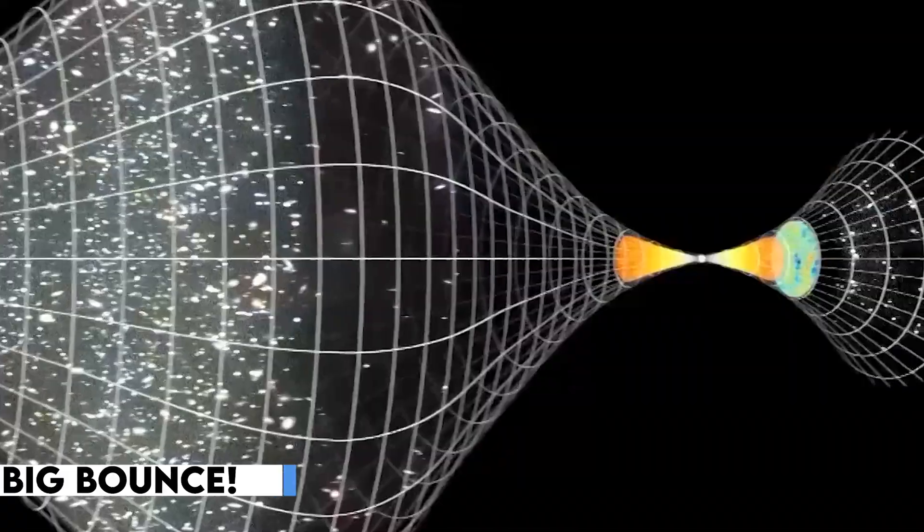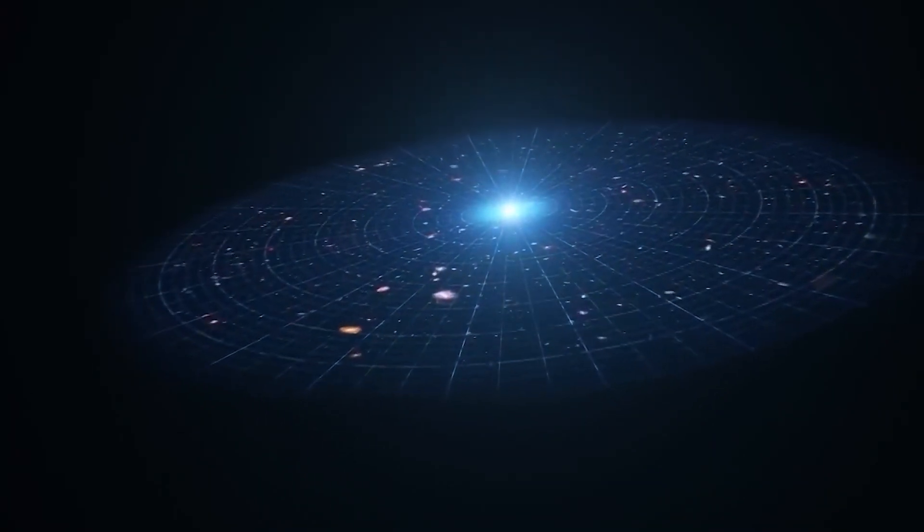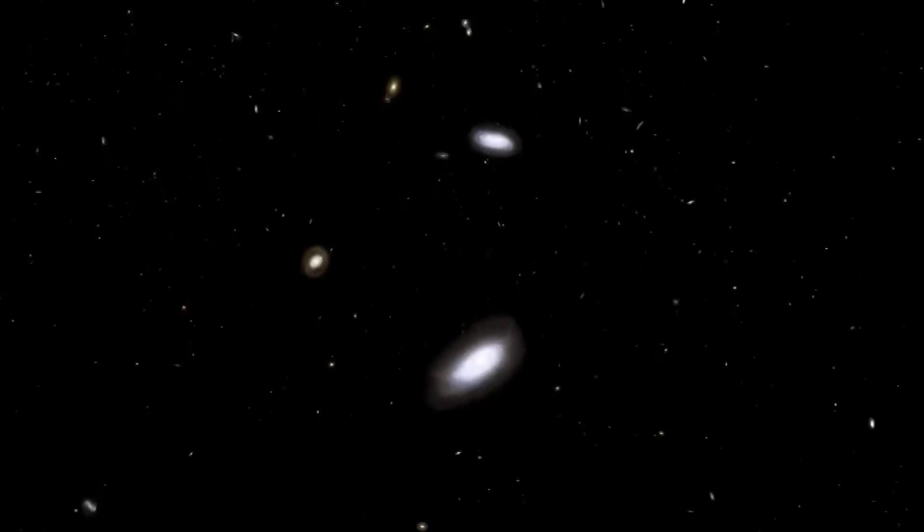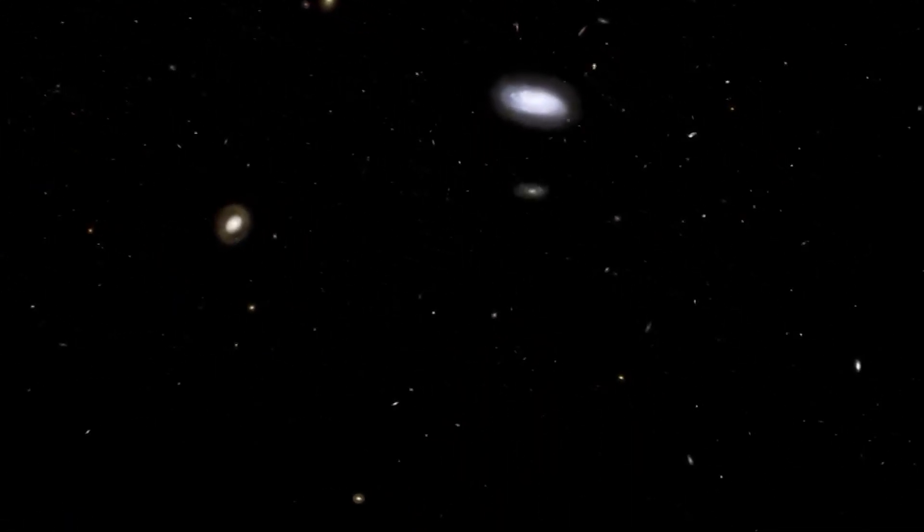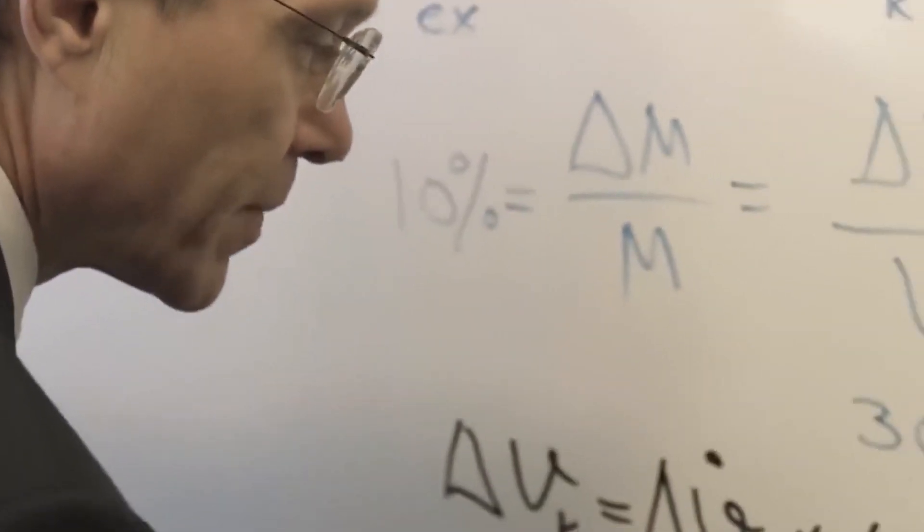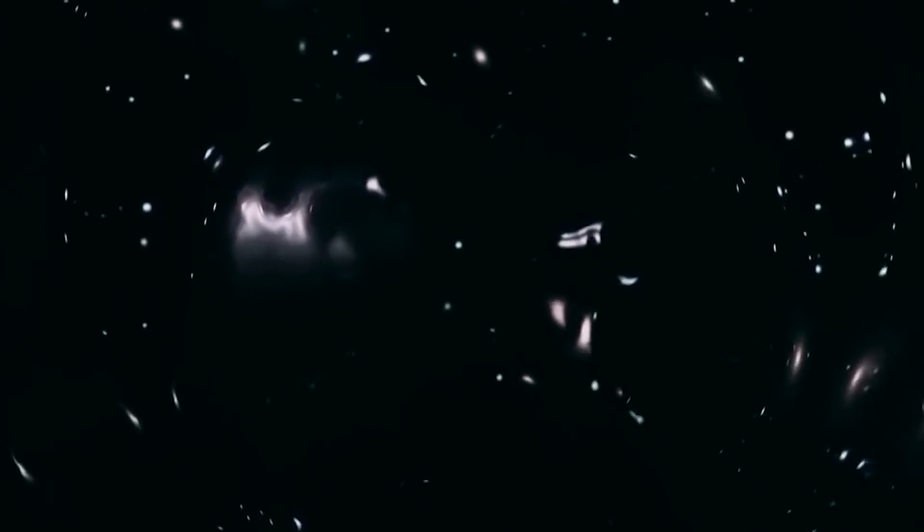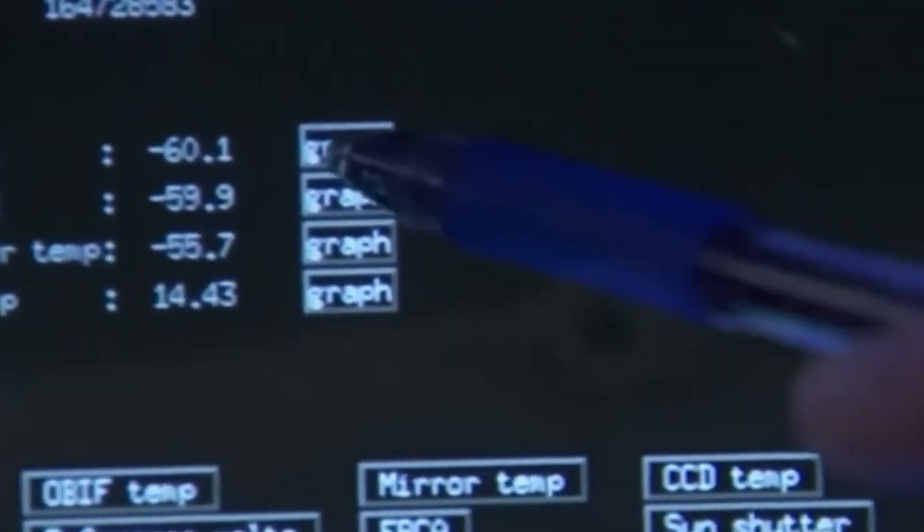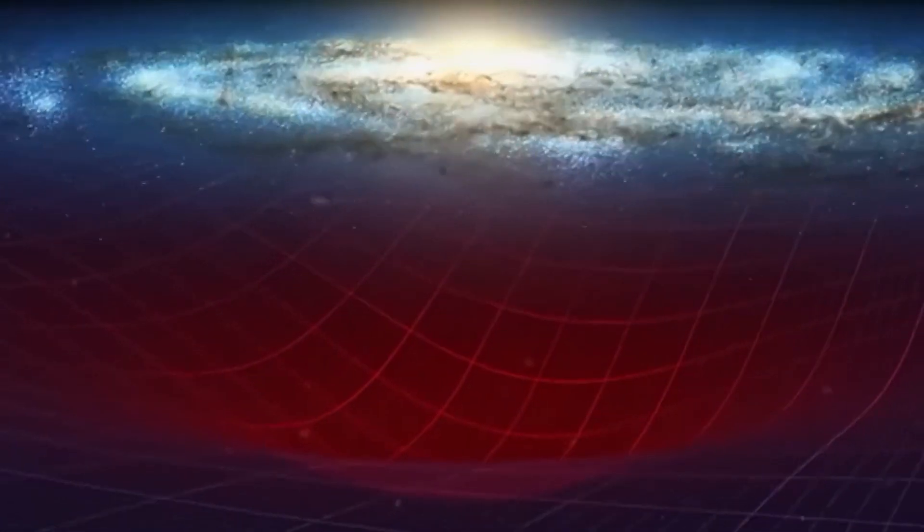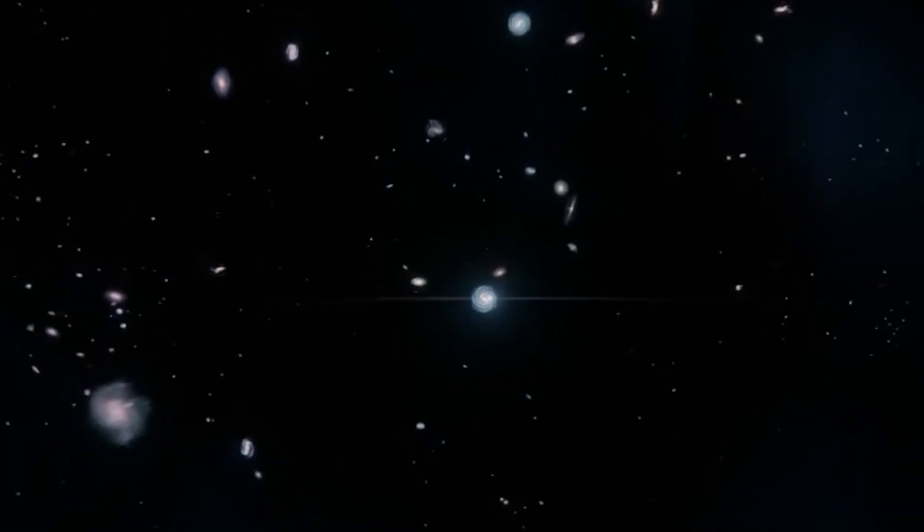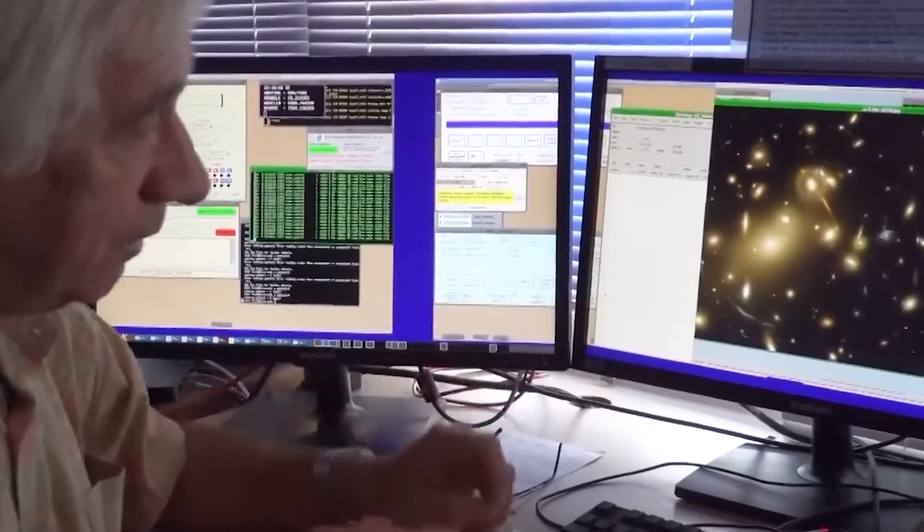Enter the Big Bounce. This intriguing alternative theory suggests that instead of a singular explosive beginning, the universe has been bouncing between expansion and contraction cycles. It's like a cosmic trampoline. But let's not stop there. Some scientists are even toying with the idea of ditching the speed of light altogether. Talk about bending the rules of the universe. But here's the real question. Are these alternative theories a genuine solution or merely cosmic band-aids to avoid facing the unthinkable? Is it time to forget the Big Bang Theory altogether?